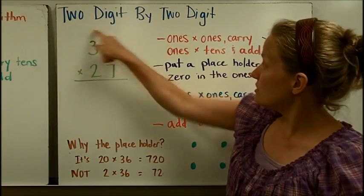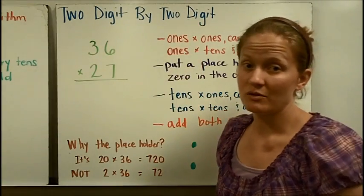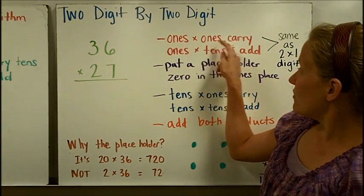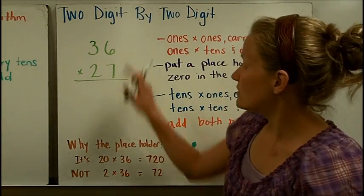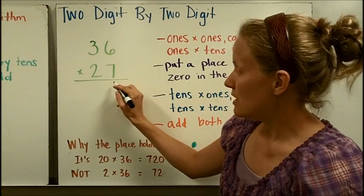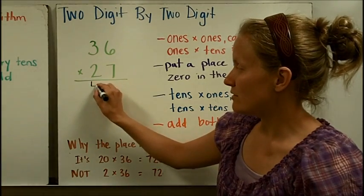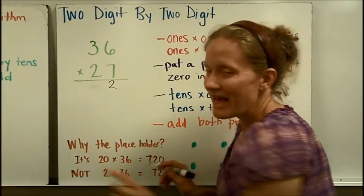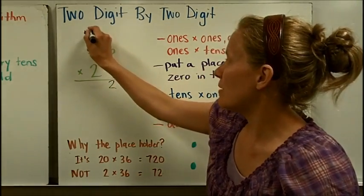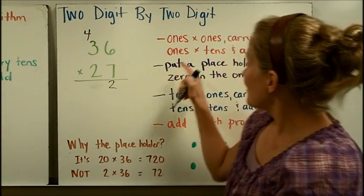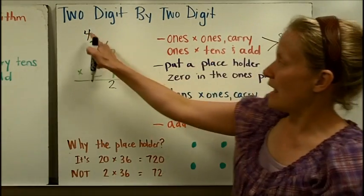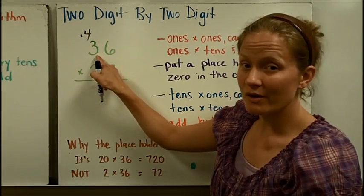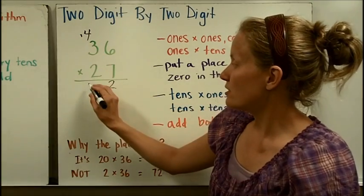Next we're going to do a two digit by two digit using the traditional algorithm. The first thing I want to do is multiply my ones times my ones and carry. So 6 times 7 is 42. And remember in the partial products method you wrote down 42. But we're going to go ahead and sort of begin the adding process by carrying into the tens place. Then I'm going to do ones times tens and add what we carried up there. So 7 times 3 is 21, plus 4 is 25.